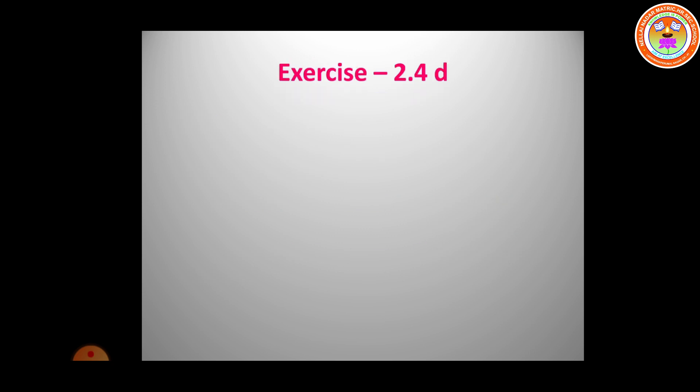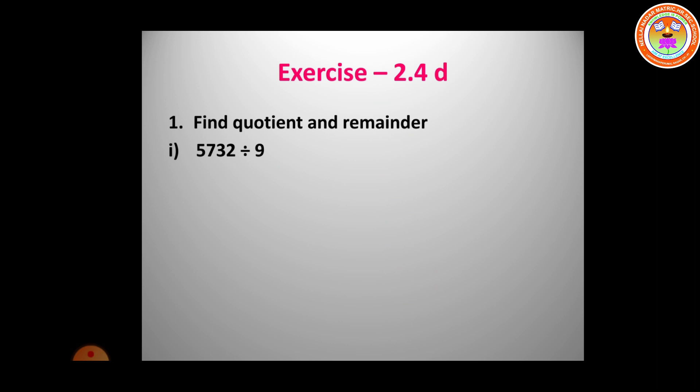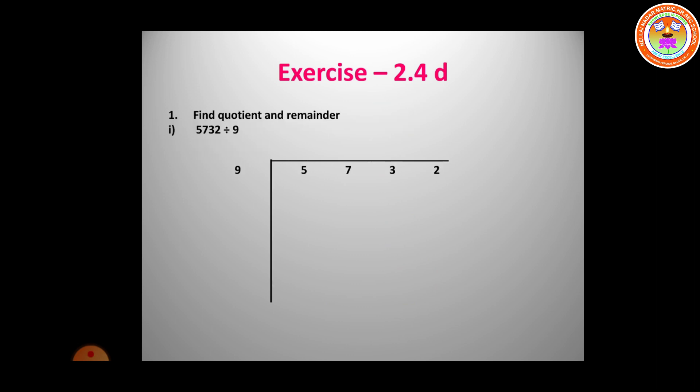Now let us see the questions from exercise 2.4D. First question: find the quotient and remainder. The first subdivision is 5732 divided by 9. When we divide, write 5732 inside the division symbol and 9 to the left. Consider the number from the left — 5 is smaller than 9, so we take the next digit too, making it 57.